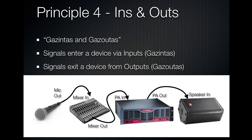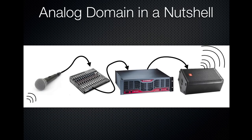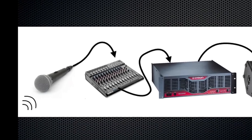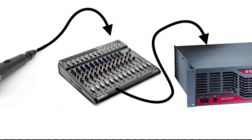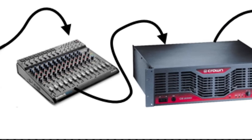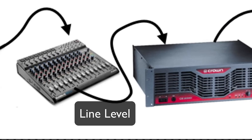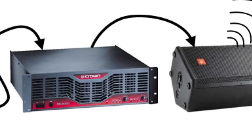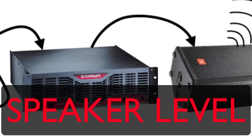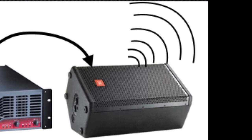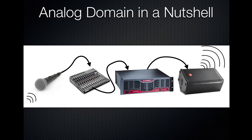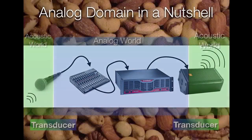So we've seen the analog domain in a nutshell. Acoustic sound enters the microphone, which puts out a mic level signal and goes into the pre-amplifier on a mixer. The mixer outputs a line level signal into a power amplifier. The power amplifier outputs a speaker level signal, which goes into a speaker, which causes sound to occur in the acoustic domain once again.